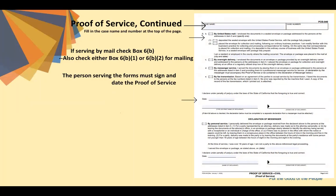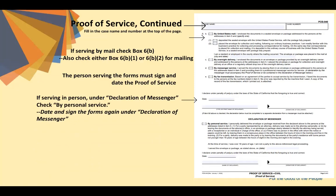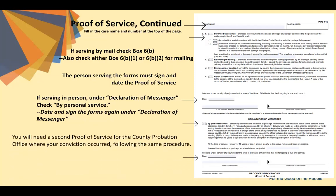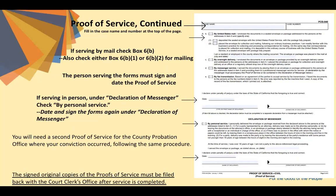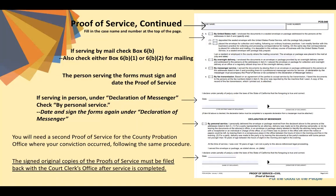Below that section, have the person who served your forms print his or her name and sign and date them. If the person is serving your forms in person, under the declaration of messenger, check by personal service, then they need to sign and date the forms. You will need a second proof of service for the county probation department where your conviction occurred, following the same procedure, but instead of the district or city attorney, you will indicate the county probation office of the particular county and its address. The signed copies of the proofs of service must be filed back with the court clerk's office in the county where you are filing your petitions.